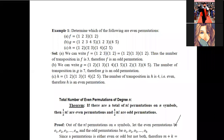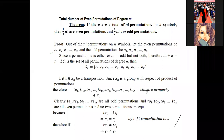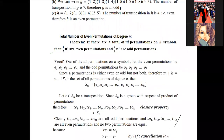Regarding the total number of permutations of degree n: if we have the symmetric group of degree n, written Sn, then Sn has n factorial elements, and every element is a permutation. Of these, exactly one-half — that is, n factorial over 2 — are even permutations, and one-half are odd permutations.